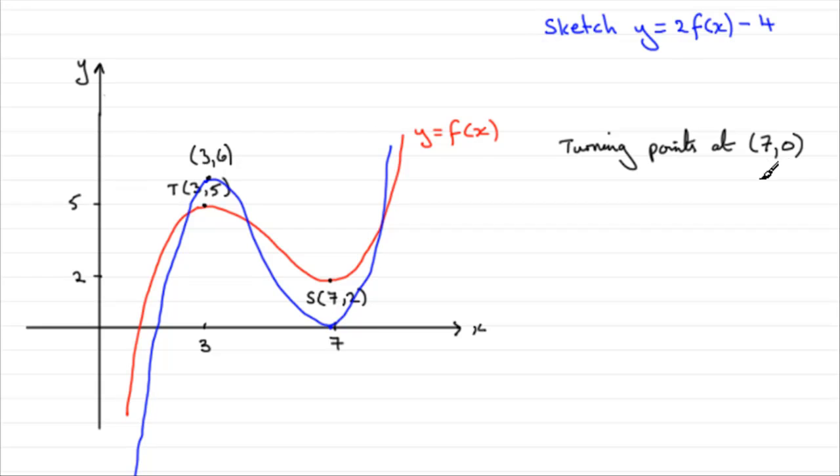All right? So we've got turning point at 3, 6. Now the graph looks a bit cluttered, so let's get rid of that red graph. And there we have it. We have the graph then of y equals 2f of x minus 4. Turning points at 3, 6. Turning point here at 7, 0.